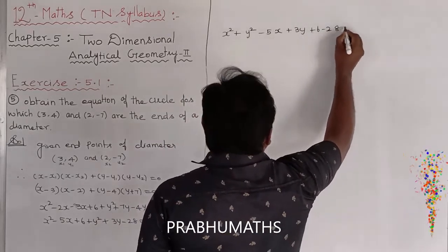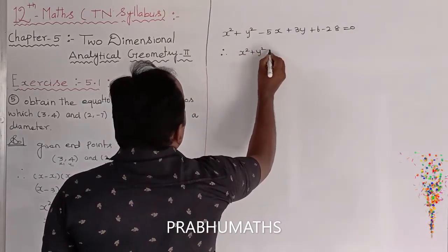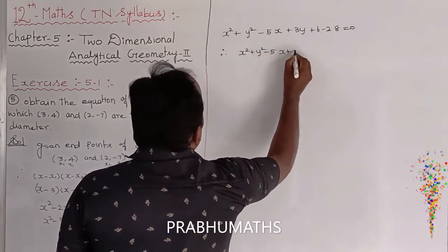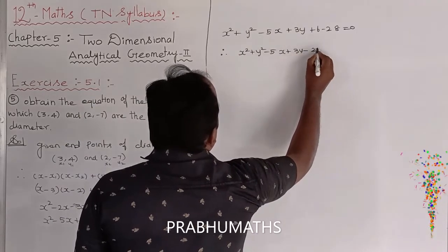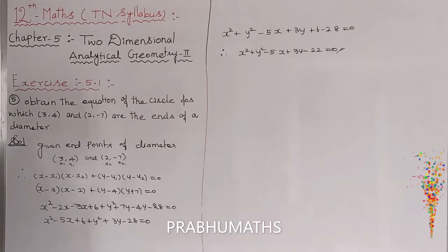Therefore, x square plus y square minus 5x plus 3y minus 22 equals 0. We get the solution. This one: 6 minus 28, so minus 22.